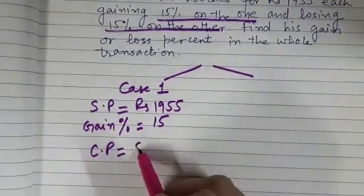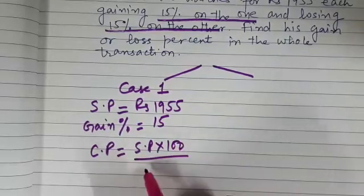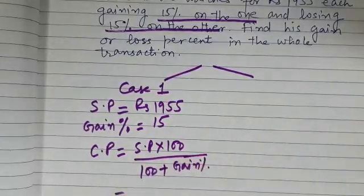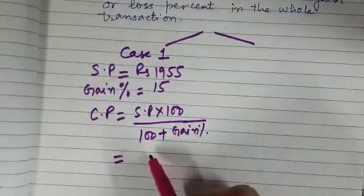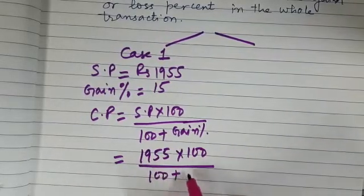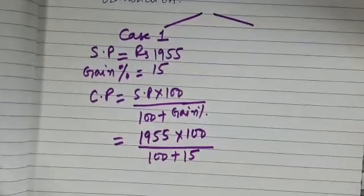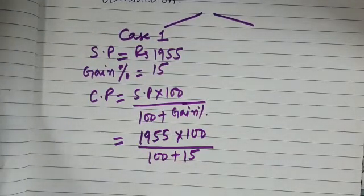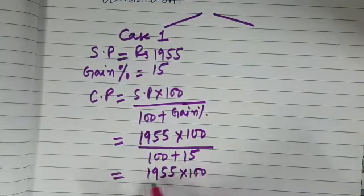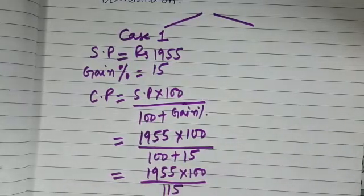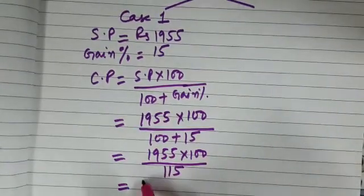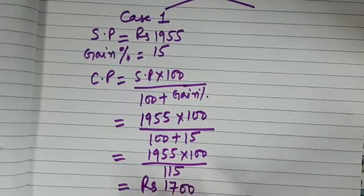We know that CP is SP into 100 upon 100 plus gain percent, so we can use this formula and find the cost price. So SP is 1955, so 1955 into 100 upon 100 plus gain percent is 15, so it is 100 plus 15. Now simplify this. So 1955 into 100 upon 115. Simplify this. Yes, I am getting answer as rupees 1700. Have you got it?